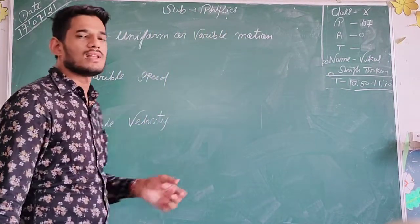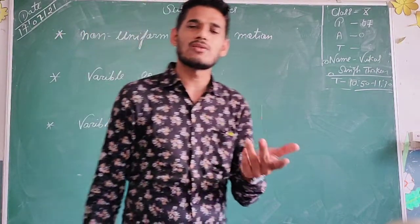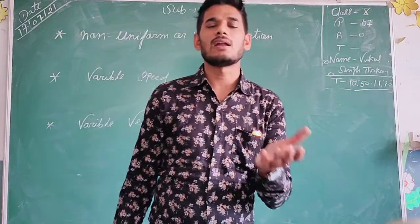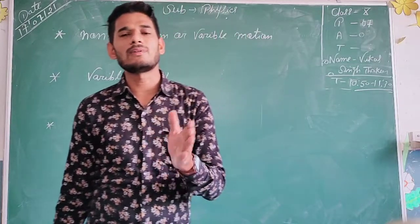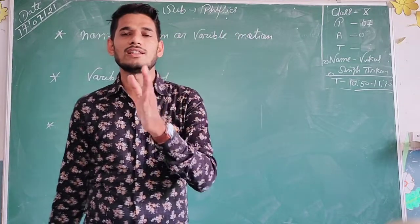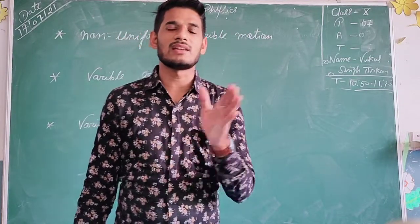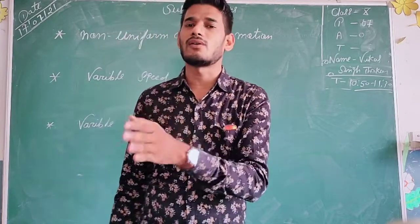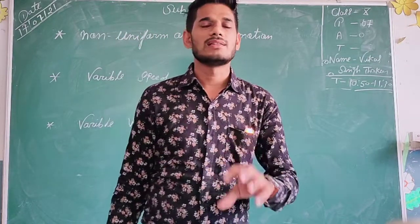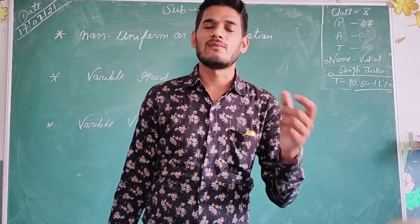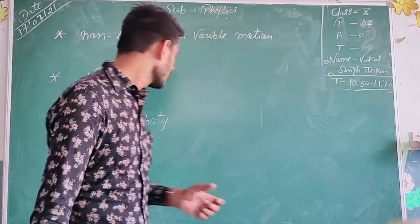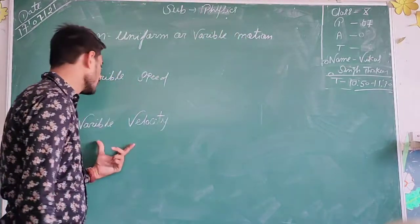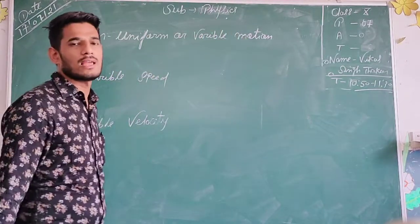When a body covers different displacements in equal intervals of time, then the velocity of the body is called variable velocity.